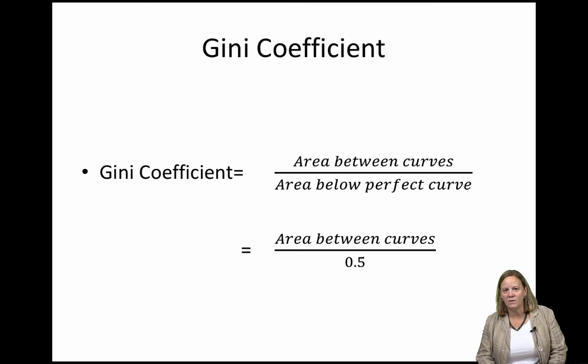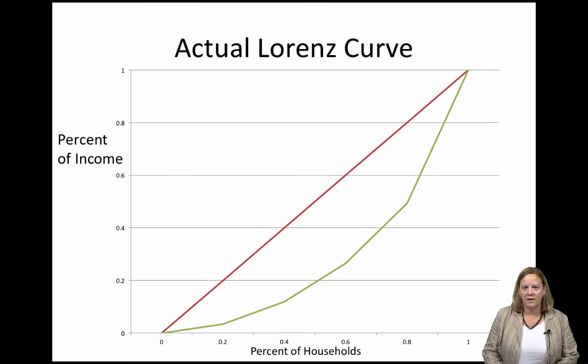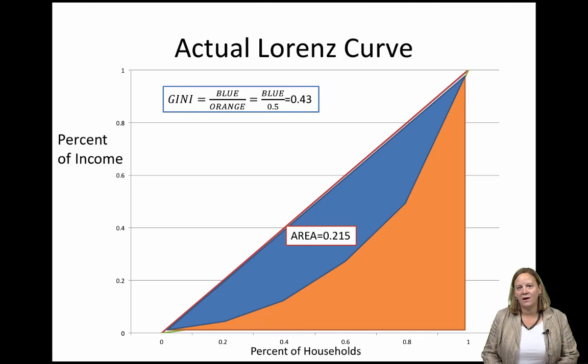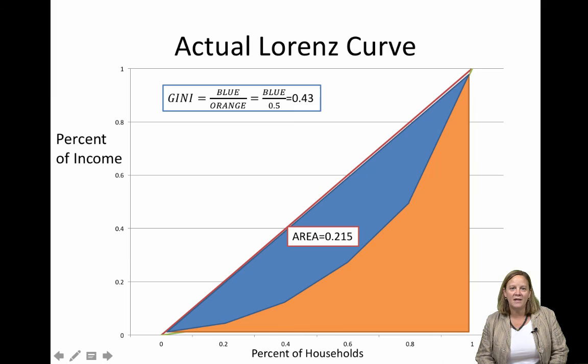The Gini coefficient equals the ratio of the total area between the two curves to the area below the line of perfect equality. Because the area under the straight line is 0.5 (half of a unit square), the area between the curves — in this case 0.215 — is divided by 0.5. As inequality increases, the Gini coefficient goes up, since the distribution pulls further from the line of complete equality. The Gini coefficient is always bounded between 0 (perfect equality) and 1 (all income going to a single individual).